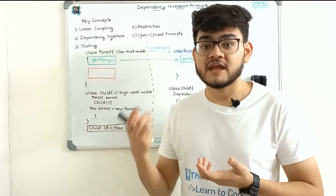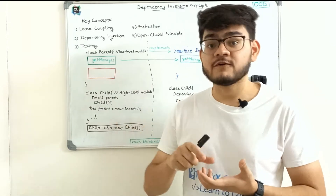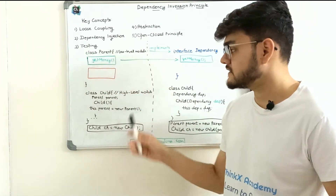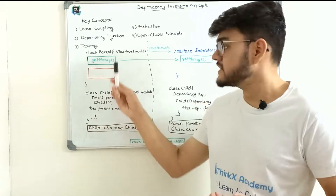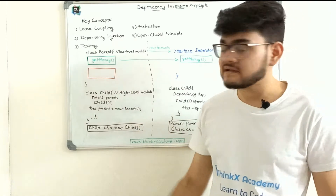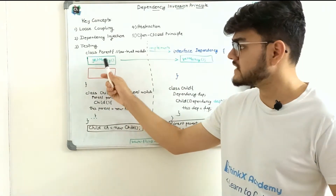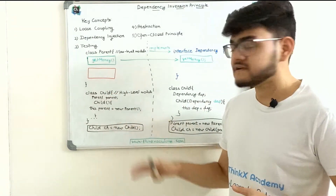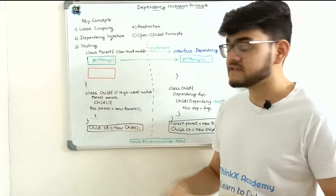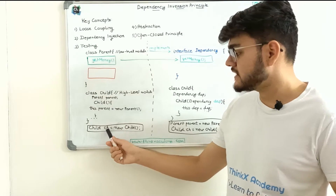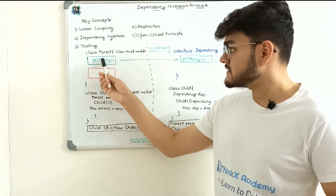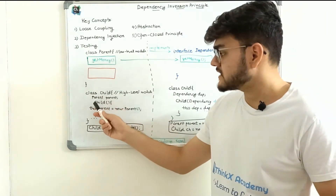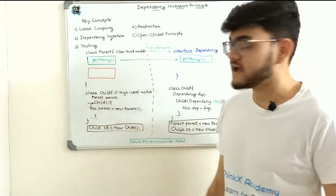Here I've created a class Parent, which is a low-level module. I want the child to be able to get money from the parent. The parent class has a green section with a get money function, and a red section with restricted behaviors. A simple approach — let's say a software developer intern says: I'll create a child object `ch = new Child`, and inside the child's constructor, I'll create an object of the parent class: `parent = new Parent`. Now I have a parent object within the child class, fulfilling the dependency.